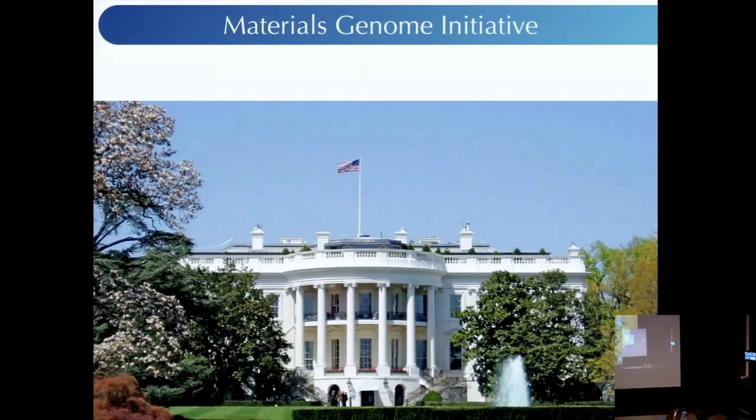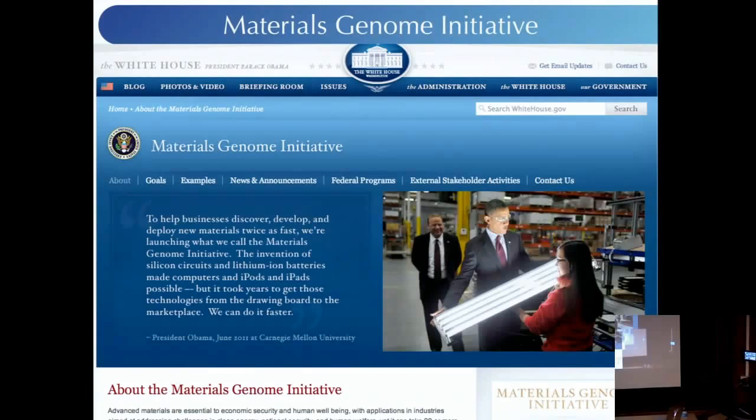Along this theme, the White House came out with what they call the Materials Genome Initiative — another fancy buzzword. The idea is that biologists found the genome and can now make rabbits with ears that glow in the dark. As material scientists, we'd like to discover the genome for materials so that once we understand it, we could design our own. That's the latest title we're giving to things we want to get funded.